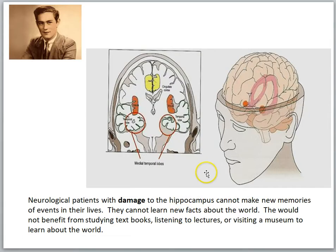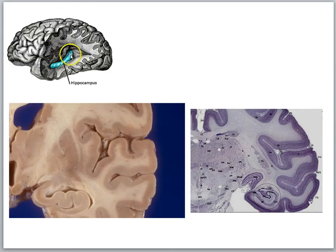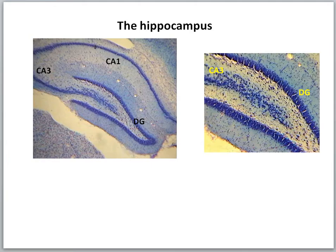We know the hippocampus is important in memory processing because of neurological patients like H.M., who had surgery where doctors removed this area of the brain, and he had a profound memory deficit — he could not make new memories. The hippocampus lies underneath the temporal cortex on both sides. Here we see a cross-section with the hippocampus shown, and here the cells have been stained. Here's a closer-up look at the structure of the hippocampus, which has an important organization thought to be relevant to how the hippocampus processes information.